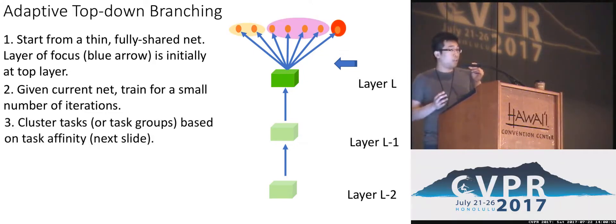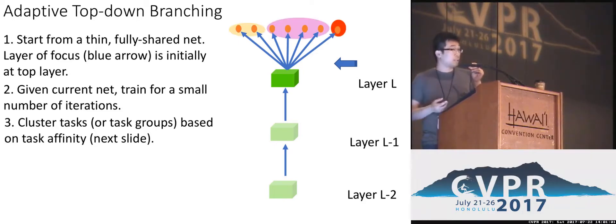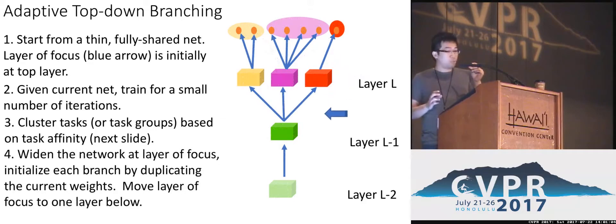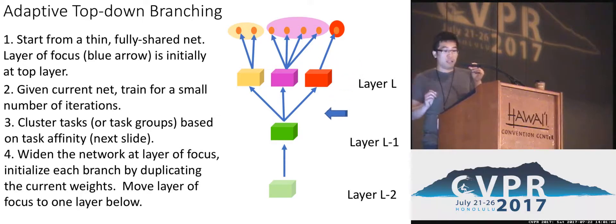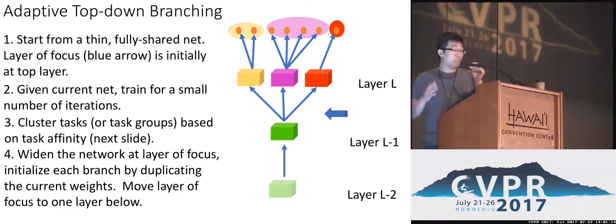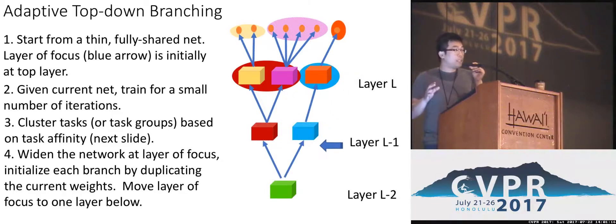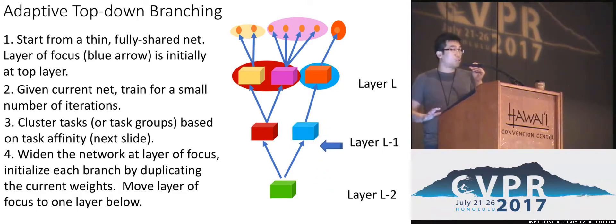Based on this task affinity matrix, we group some of the tasks together. Essentially, each group represents tasks that are related to each other. Based on this grouping, we create task-specific branches at that particular layer, and we initialize each branch by duplicating the initial parameters of the original network. We then repeat this process from the top layer to one layer below, and sequentially all the way to the bottom layer.